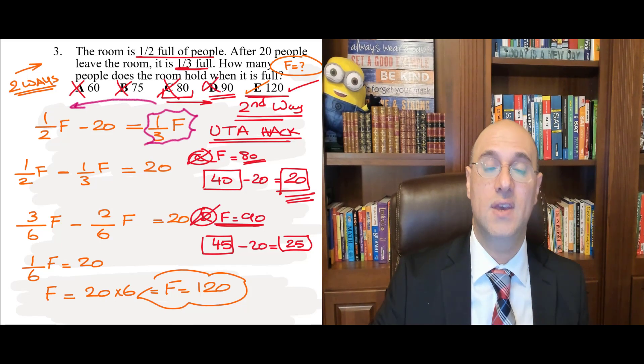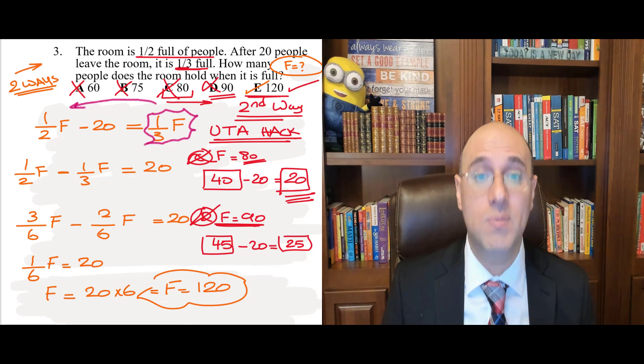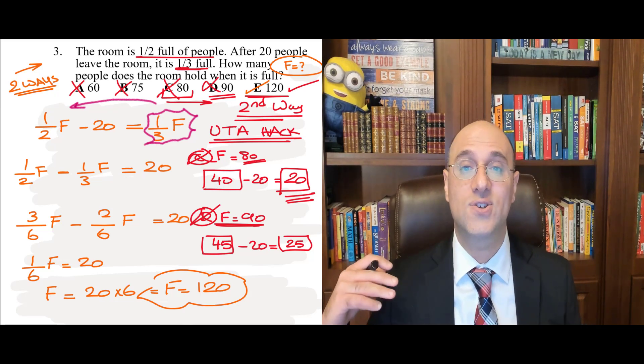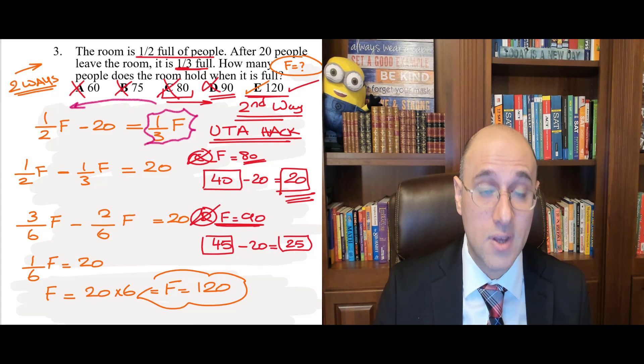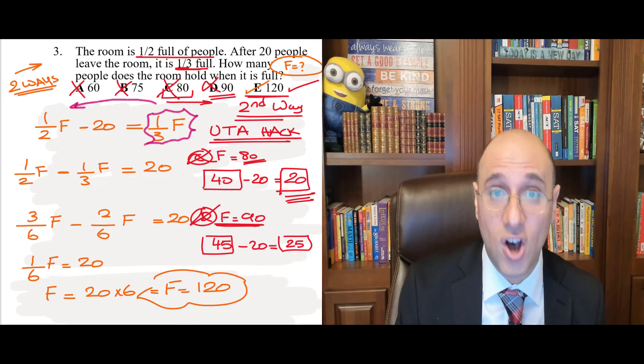So, we're only left with E. And now, you don't have to check it anymore because you're sure A, B, C, and D are wrong. The answer has to be E. Okay? So, these were the two ways of doing such a thing. All right, people?